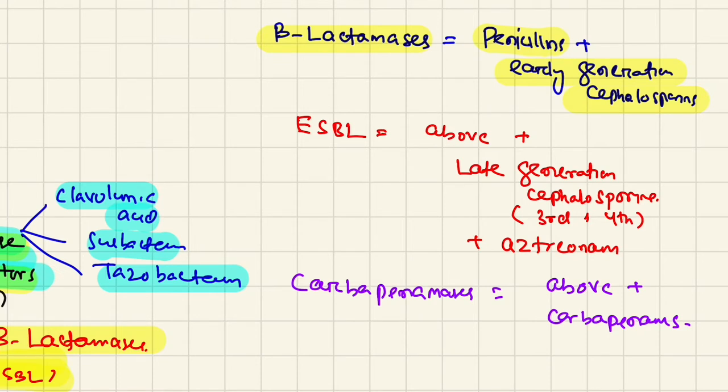When bacteria produce ESBL, by definition the bacteria is resistant to penicillins and early generation cephalosporins, plus late generation cephalosporins - the third and fourth generation cephalosporins including ceftriaxone, cefotaxime, ceftazidime, and cefepime.